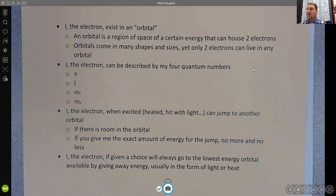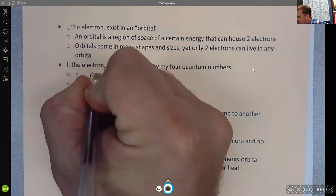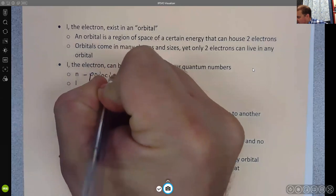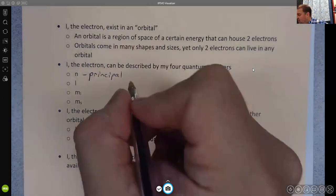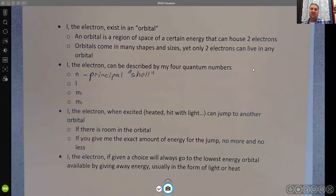I, as the electron can be described by what are called four quantum numbers. And we've already seen two of these at least in use. n is called the principal quantum number. But this is really like the shell number. So when we talk about the energy level of the electrons or we talk about the shell, that's what this one is.